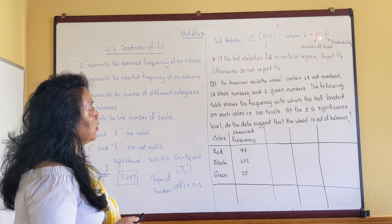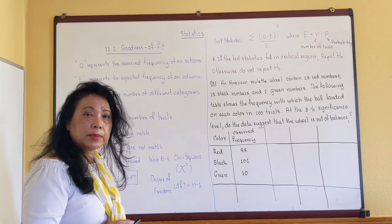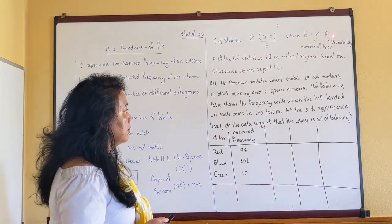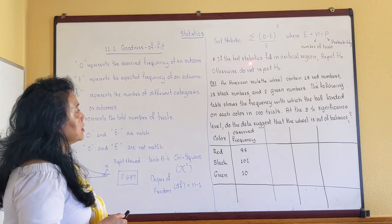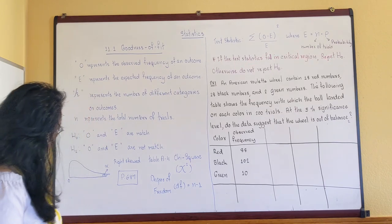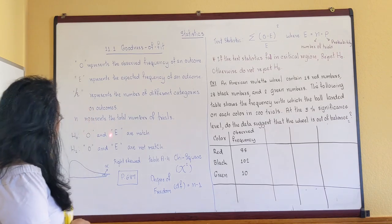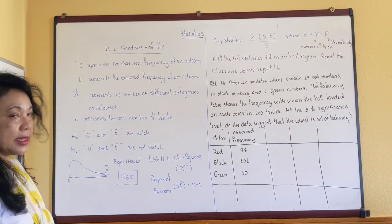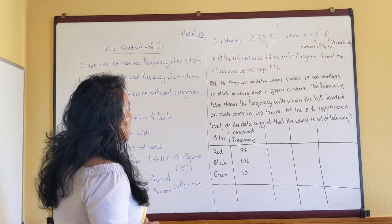The test statistic formula is: take the observed frequency minus the expected frequency, square that quantity, and divide by the expected frequency — and you sum all of those. The expected frequency E comes from n, the number of trials, times the probability. Sometimes the probability will be given to you; sometimes you have to calculate it yourself depending on the question. If the test statistic falls in the critical region — the shaded area — you reject H-naught, meaning the observed and expected are not matched. Otherwise, do not reject H-naught.